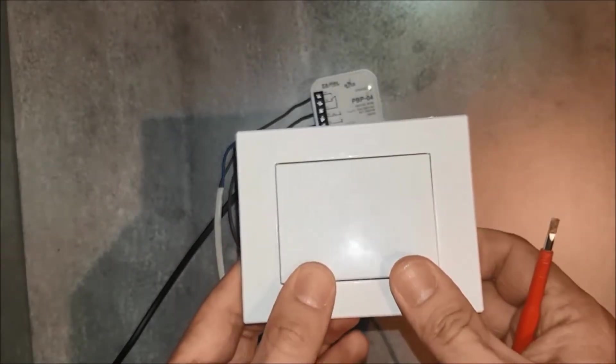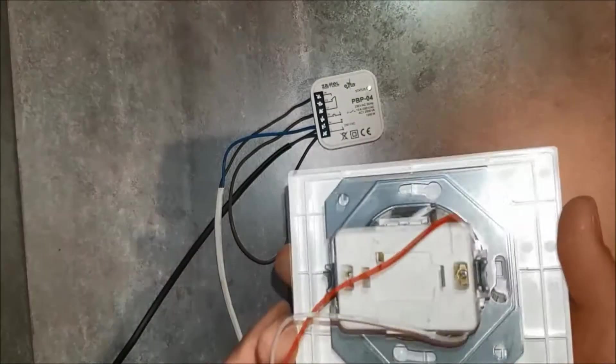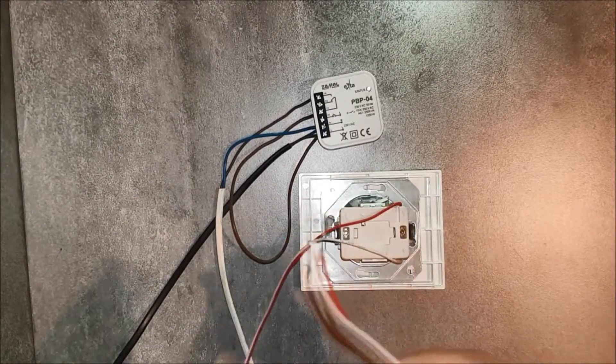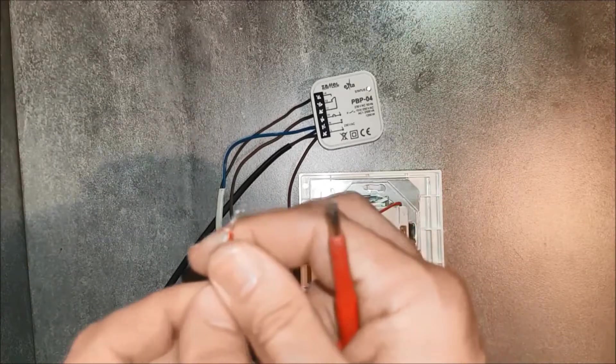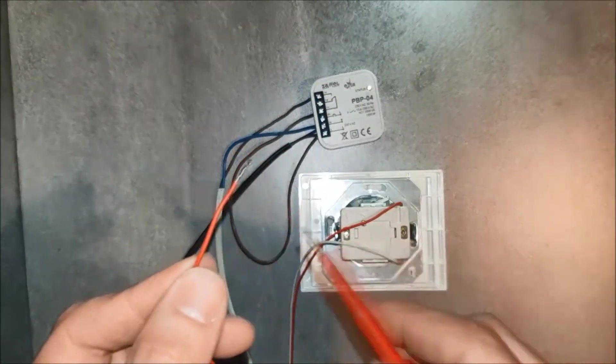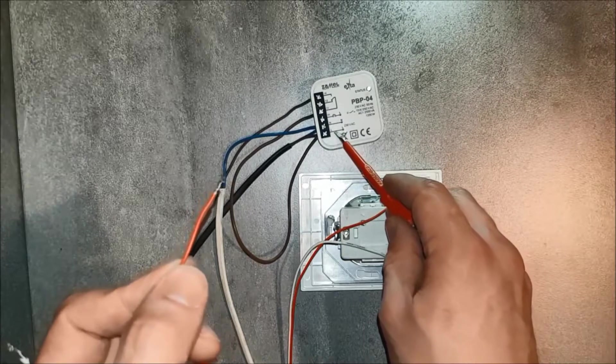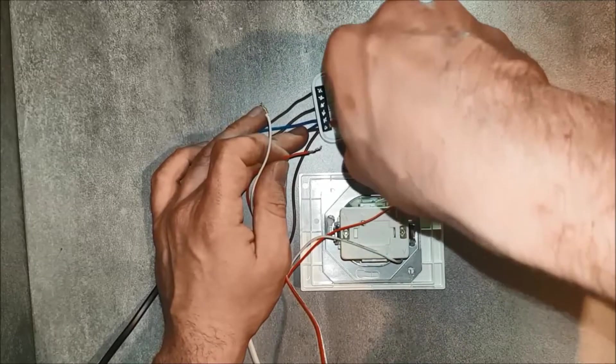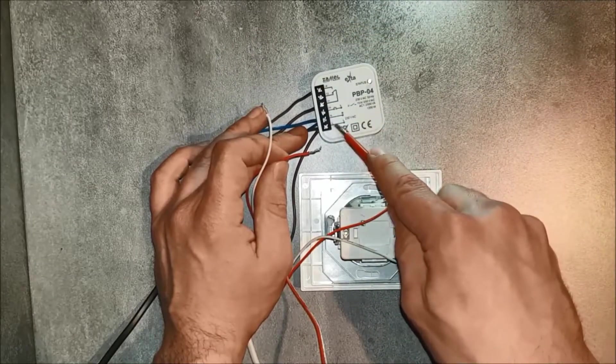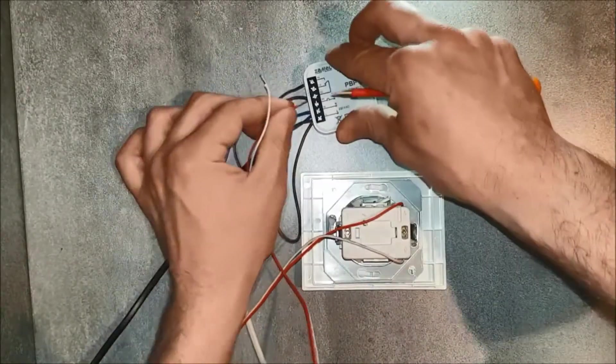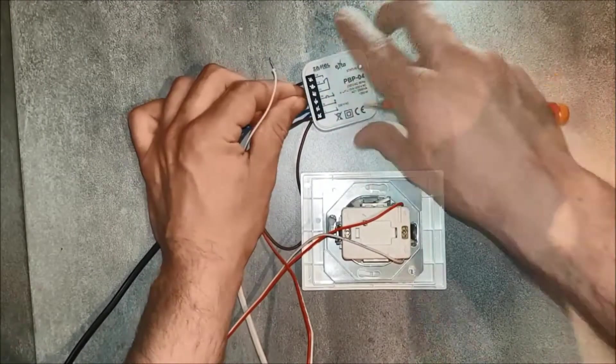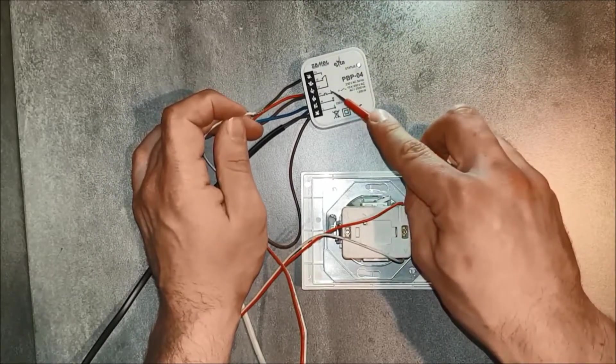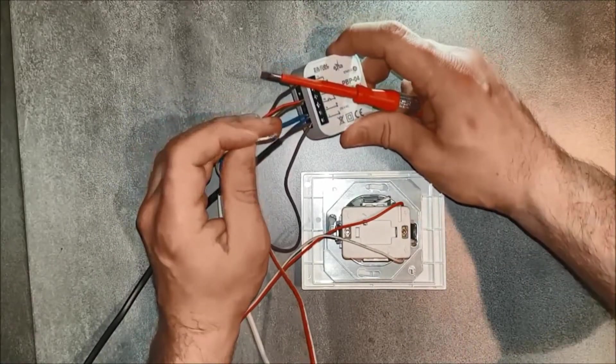Connect the unipolar button. Provide the phase signal through terminal 1. The same terminal is now available under terminal 11. The second wire is connected to the input IN.